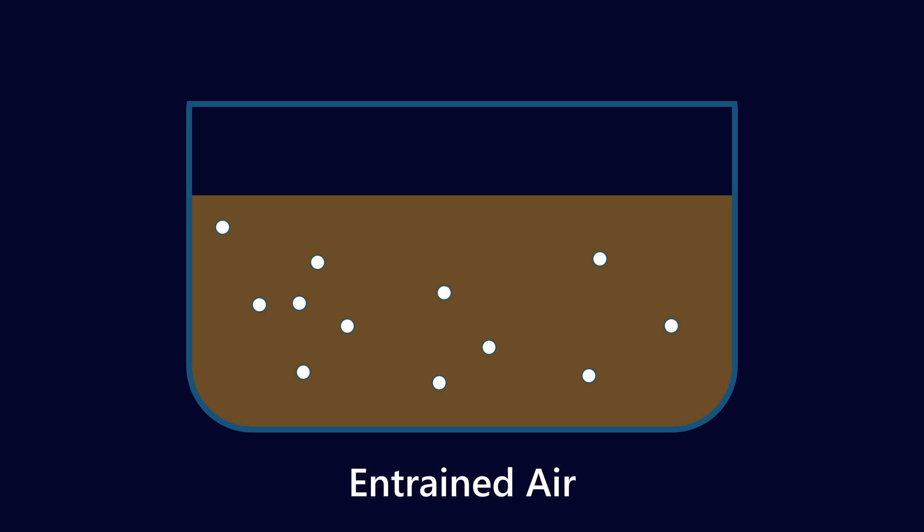Then you've got what we call entrained air, so bubbles and pockets of air within the oil system that aren't breaking out to the surface, but they're just kind of held in suspension. This can be quite dangerous because you can get micro-dieseling, you can get hydraulic actuators not functioning correctly, low head for a centrifugal pump, cavitation. There's all kinds of stuff that can happen when you have a lot of entrained air. So a little bit is normal, but a lot of entrained air can become a problem.